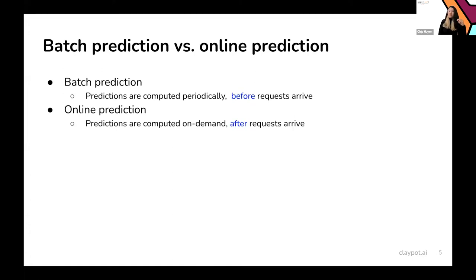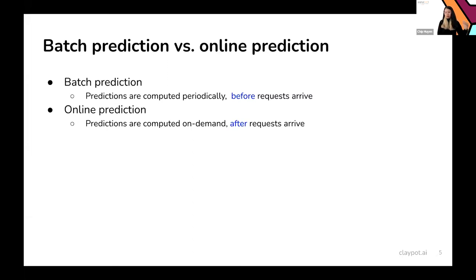Online predictions are when predictions are computed on demand, after requests arrive. The problem with batch prediction is that it's not adaptive — because predictions are computed before requests arrive, you can't take into account relevant information. This shows a lot in tasks like recommendation systems or dynamic pricing. Another problem with batch prediction is cost: you generate predictions for all possible users, but only a small fraction log in daily, so 99% of computed predictions go unused — a huge waste of compute.